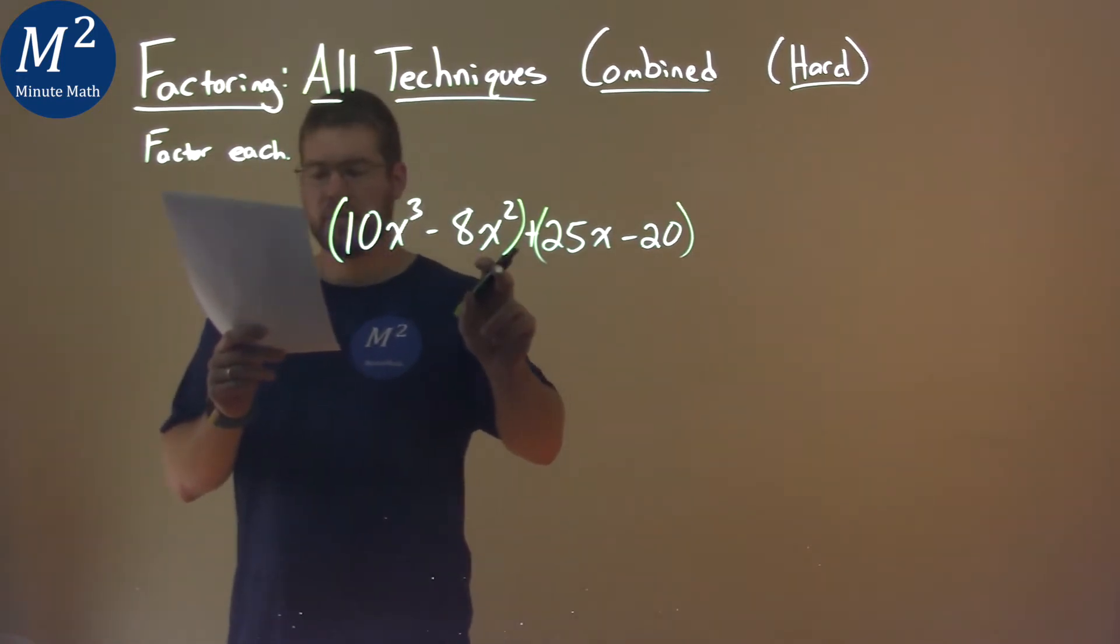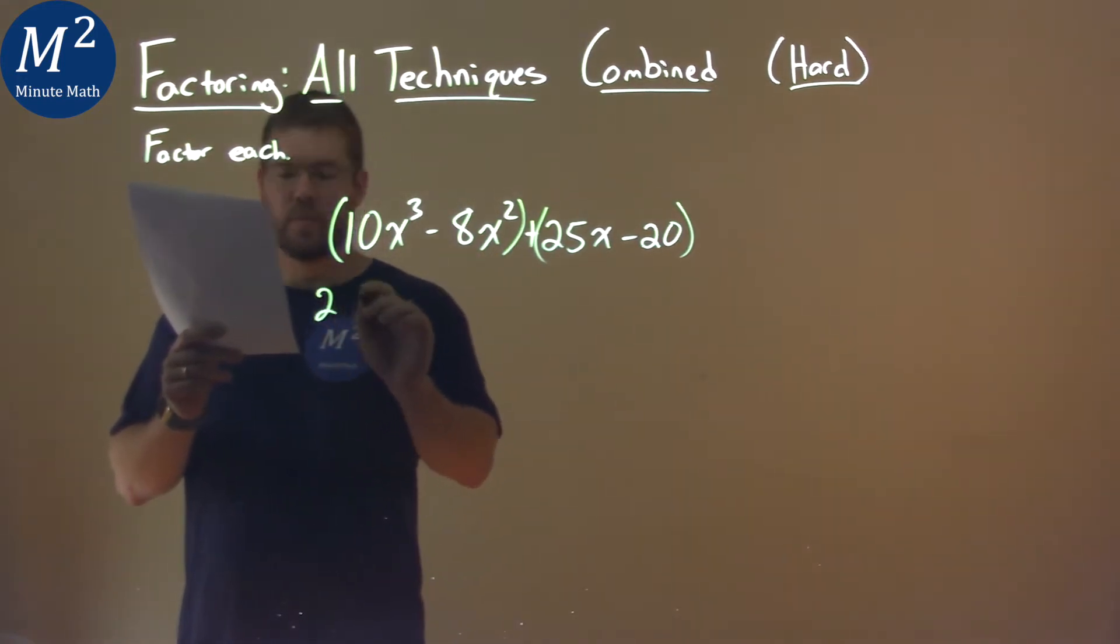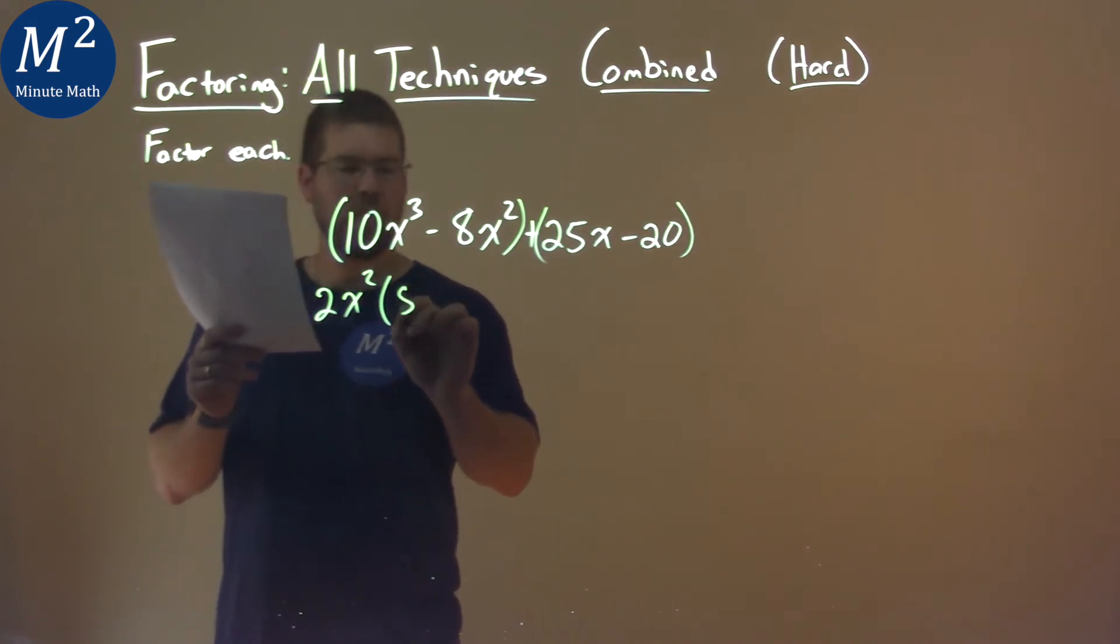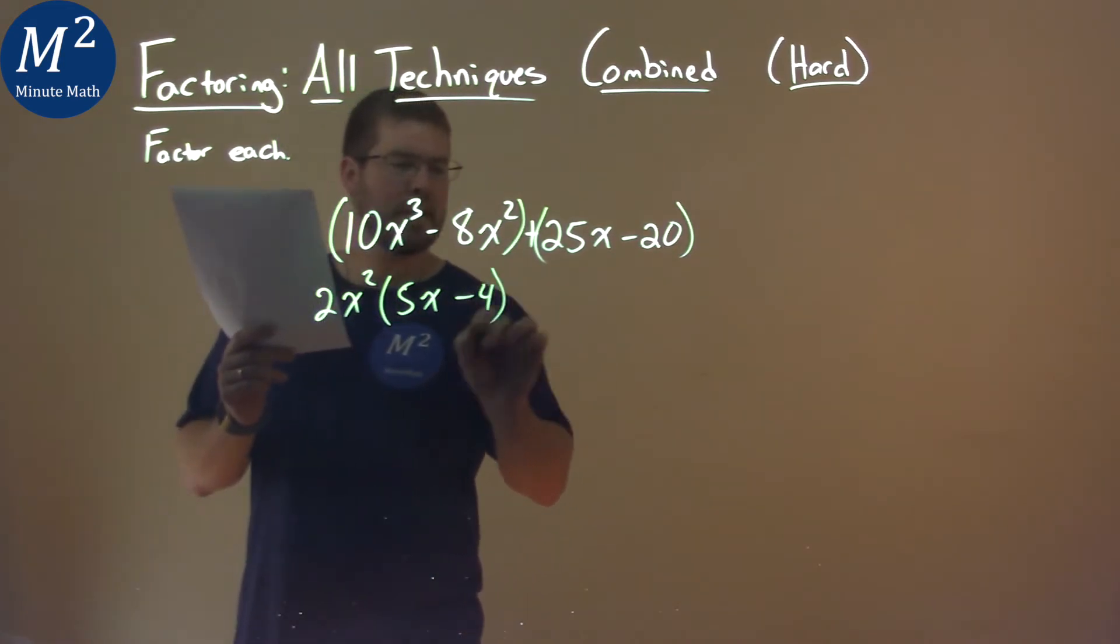First two terms, what can we pull out that's common? A 2 goes into both numbers as well as an x squared. Pull that out and we have a 5x minus 4 here.